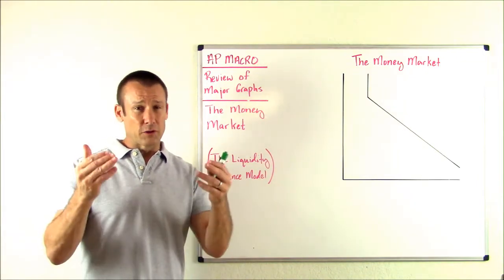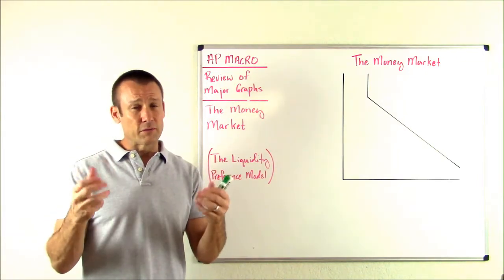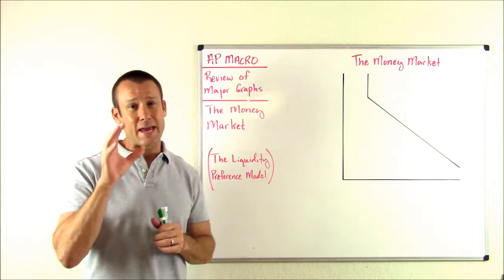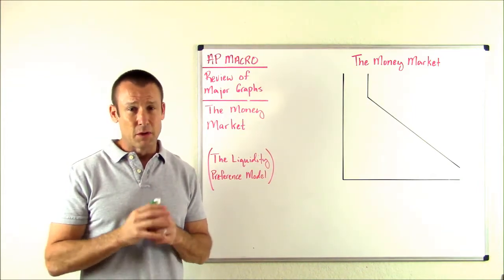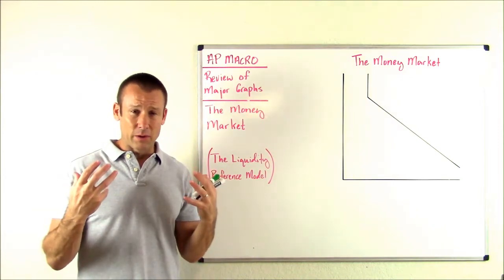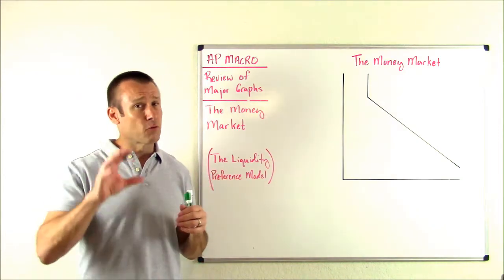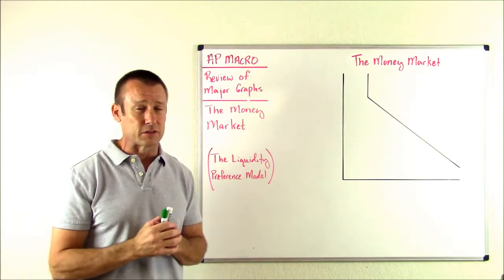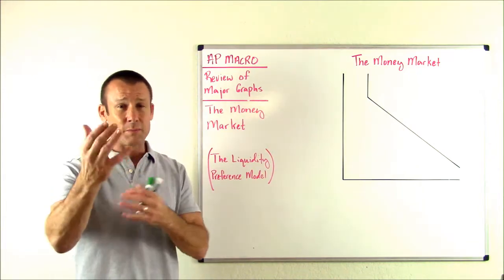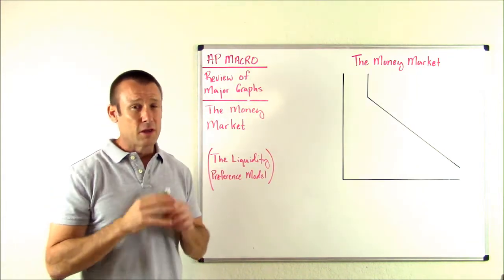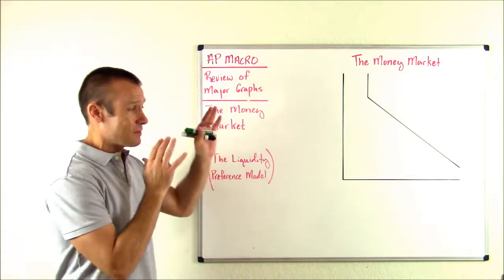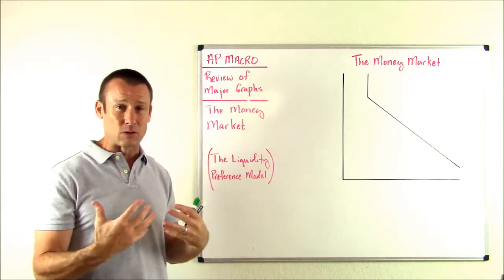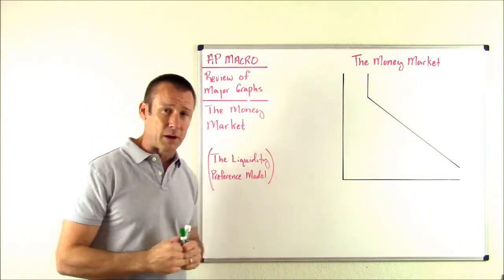So there is an opportunity cost of holding your wealth in liquid form — currency and checking account — and that is the nominal interest rate. When you hold your wealth in liquid form, you're giving up the nominal interest rate because you are giving up both the real interest rate and the inflation premium. That's what this model is showing us: our preference to hold our wealth in liquid form.